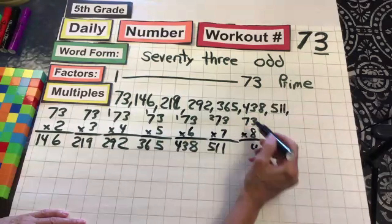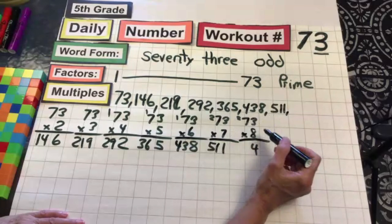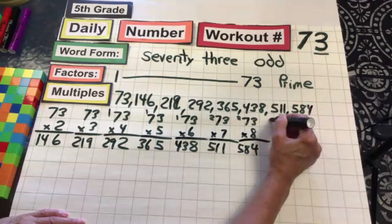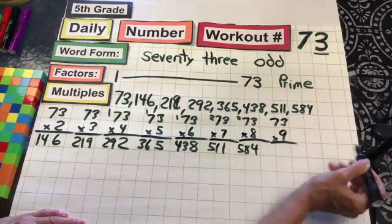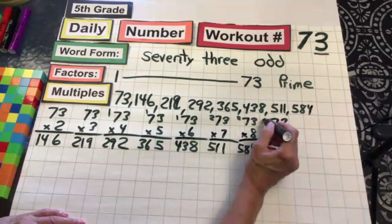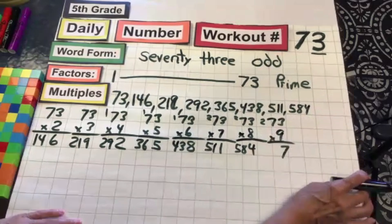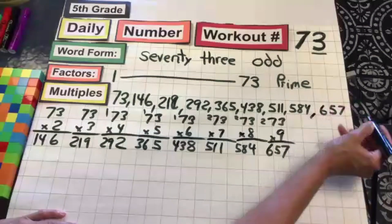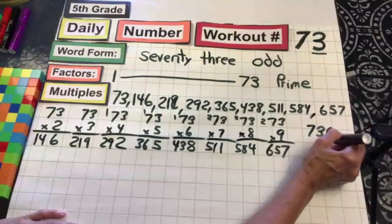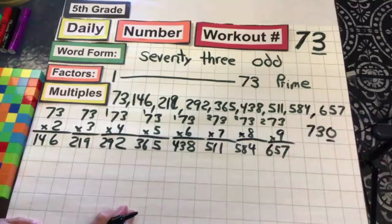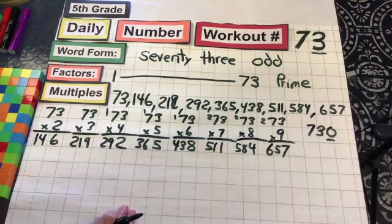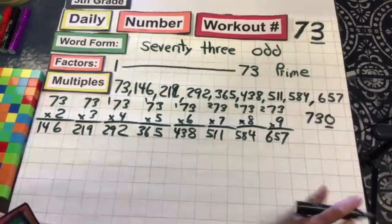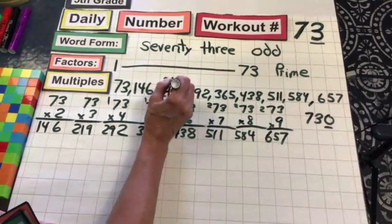Drop the eight. Drop the four. Carry the two. Eight times seven is 56.